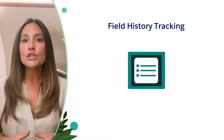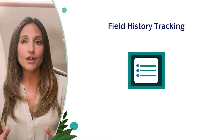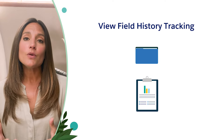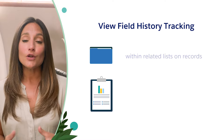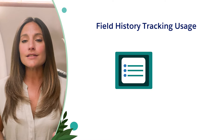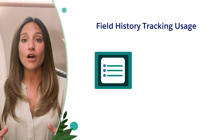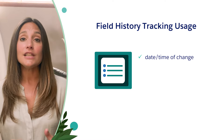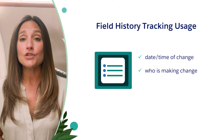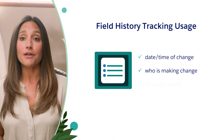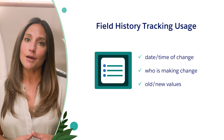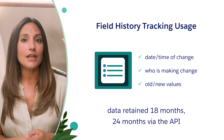Field History Tracking is useful across all standard and custom objects to track up to 20 standard or custom fields. We can view changes to our fields within a related list on a record or using reports. Field History Tracking logs the date and time of changes to field values made by users, the user who is making the change — since multiple users can have access to one record — and the old and new values. This data is retained up to 18 months, or 24 months via the API.